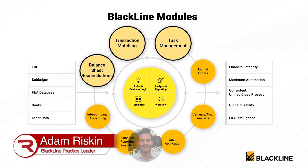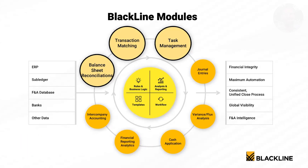Blackline offers eight different modules to help accounting teams close the books, but today's conversation will cover the three most commonly used modules. The first is the balance sheet reconciliation module. It has a ton of features that can save you time and reduce errors. You'll hear us talk about auto-certification rules, which allow the system to complete recs for you — on average, Blackline customers have 60% of reconciliations automated via these rules.